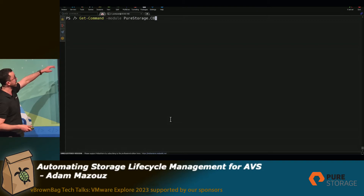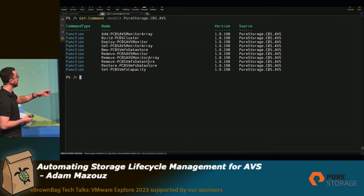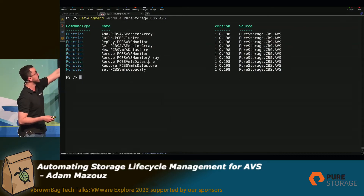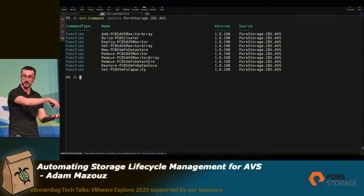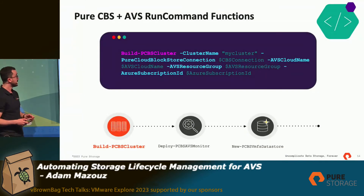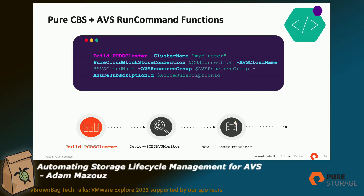The first thing I show you here is the OVA — the Cloud Manager. I can see all the commandlets I've installed from the PureStorage.CBS.AVS module. This is the wrapper we put together for the PowerShell SDK and the Azure Run Commands. To initialize the integration between AVS and CBS, you run the Build-CBS-Cluster commandlet — you pass the cluster name, the private cloud name, and the Cloud Block Store connection. This OVA can then talk to CBS, to the AVS control plane, and to the AVS cluster itself on the VMware side.